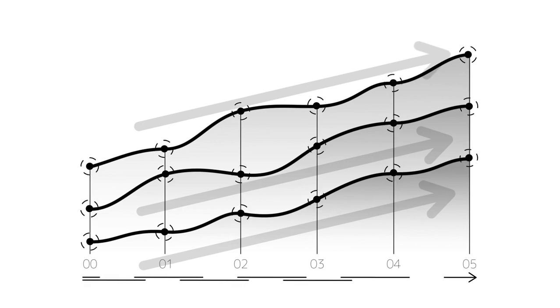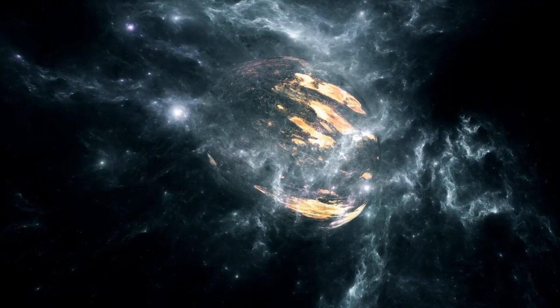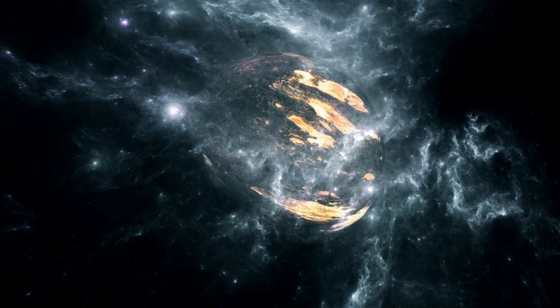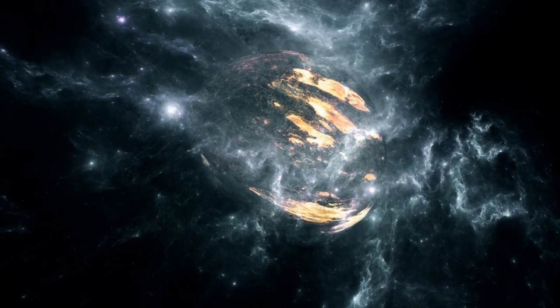Regarding the possibility of a Betelgeuse supernova, astronomers speculate that it could occur at any time within the next 10,000 to 100,000 years. Based on factors such as the star's color, brightness, size, and estimated age,